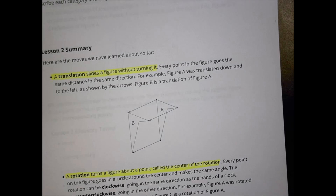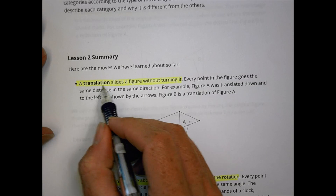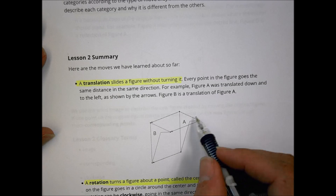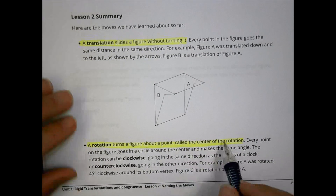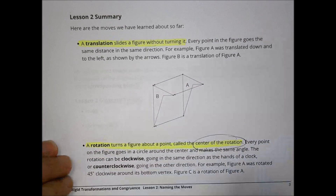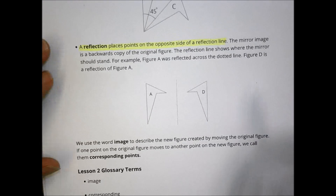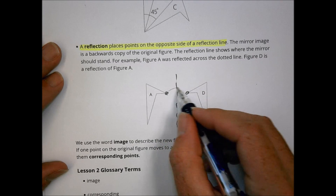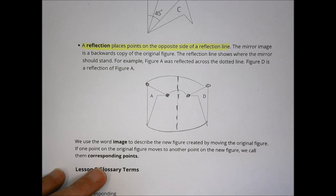In summary of the lesson, before we get to today's homework: a translation slides a figure without turning it — just sliding from one position to the other. A rotation turns a figure about a point called the center of rotation, either clockwise or counterclockwise. A reflection places points on opposite sides of a reflection line, so corresponding points are on opposite sides of that line.